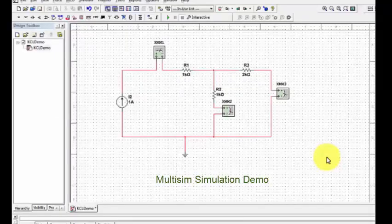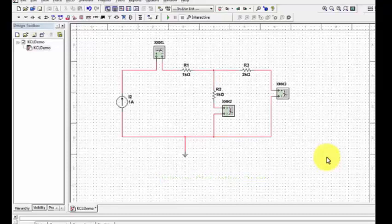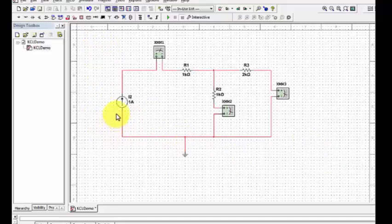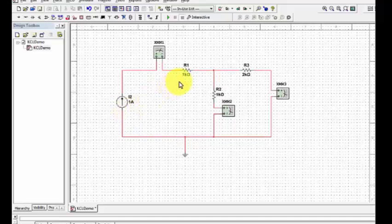Now we use this video to demonstrate Kirchhoff's current law. In this circuit, we have four components: a current source of one ampere, a 1K ohm resistor, another 1K ohm resistor, and a 2K ohm resistor located over here.